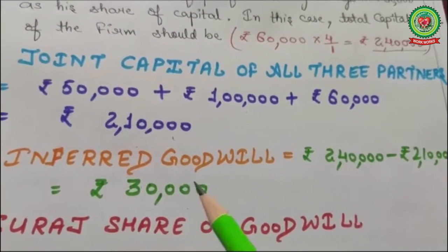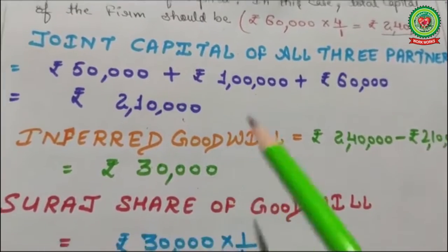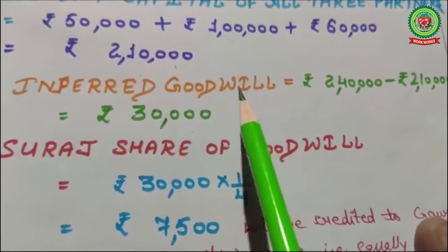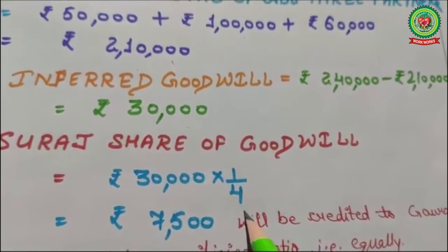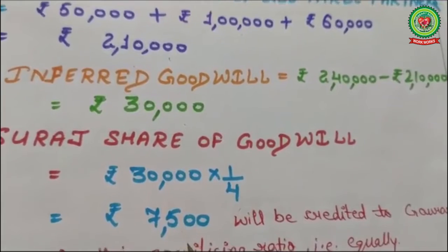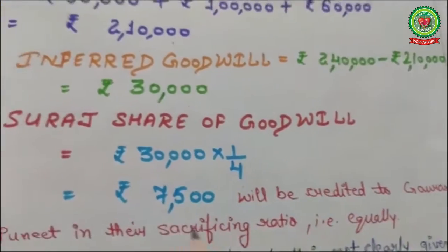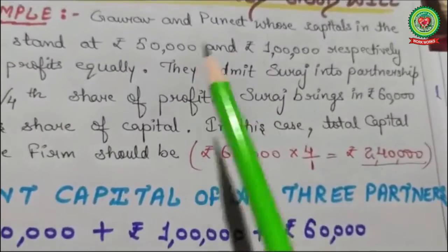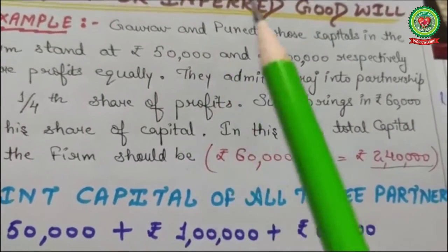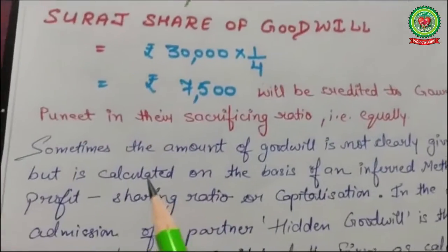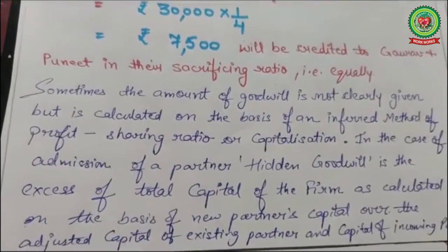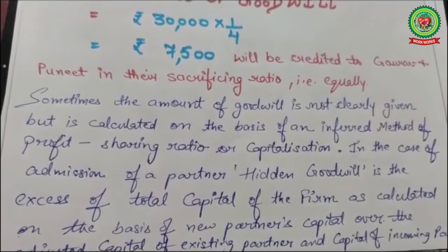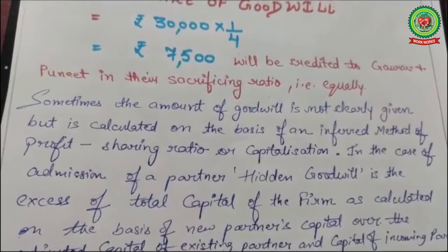The value of goodwill of the firm is thirty thousand. Suraj's one-fourth share of goodwill of the firm is seventy-five hundred, which will be credited to Gaurav and Puneet in their sacrificing ratio equally, because both are old sacrificing partners. Sometimes the amount of goodwill is not clearly given but is calculated on the basis of an inferred method using profit sharing ratio or capitalization.